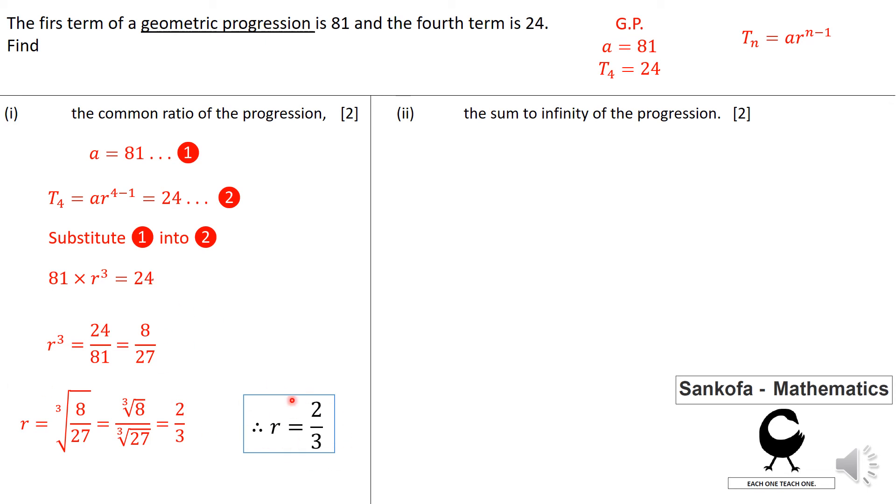When your common ratio is 2 over 3, then obviously when you are finding the sum to infinity, that means as you go along with this progression, it's a convergence series. It tends to get closer and closer to a number. The question is asking, what is that number? The formula for sum to infinity is A over 1 minus R. We know A is 81, we know R. Therefore, our sum to infinity is 243.